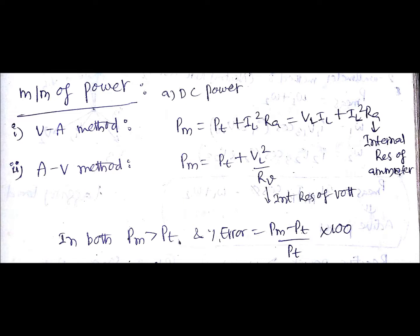In case of VA method, the PM, that is measured power, is equal to PT, that is true power, plus IL square into RA, where RA is the internal resistance of ammeter.